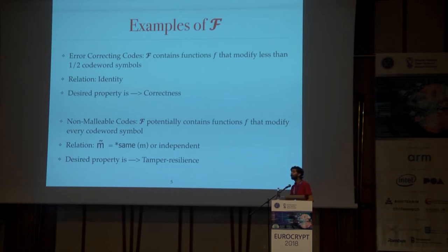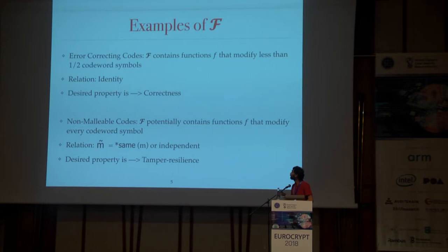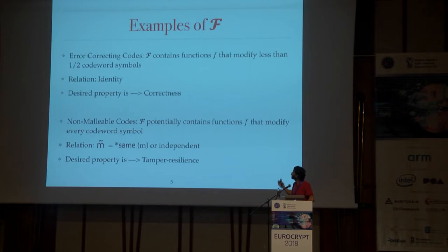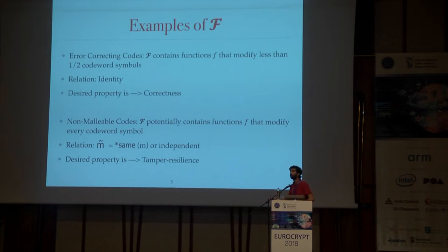But now consider that the adversary can potentially modify every single bit of the codeword C. Obviously you cannot get correctness in this case, but what you can afford is something called non-malleability. The relation we want here is that when we decode the tampered codeword, we get either the original message or something completely independent — meaning the adversary cannot tamper the codeword so that after decoding we get M plus 1 or some function of M. We either get the message we started with or something completely unrelated. The desired property here is tamper resilience.